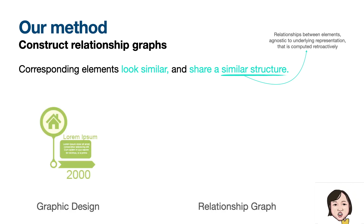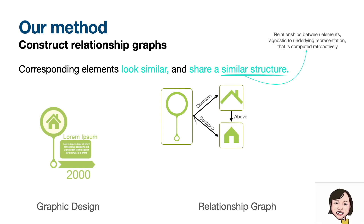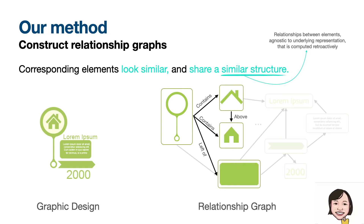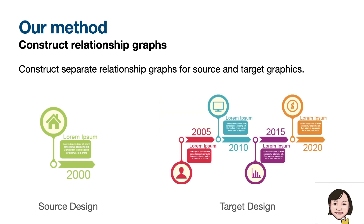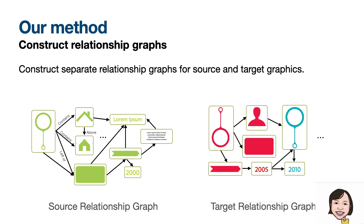Let's go back to the introductory example. We construct relationship graphs where nodes represent individual elements, and edges represent the relationship between them. The bubble contains the house icon, where the roof element is above the body of the house, so on and so forth. We automatically construct separate relationship graphs, one for the source design and the other for the target design that we are trying to match.